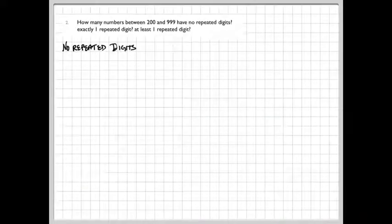The second problem actually has three parts. We're asked to find how many numbers between 200 and 999 have no repeated digits, have exactly one repeated digit, and have at least one repeated digit. So let's start with the first question, no repeated digits.